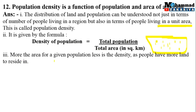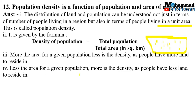Point number 3: More the area for a given population, less is the density, as people have more land to reside in — availability of land ज़्यादा है। Point number 4: Less the area for a given population, more is the density, as people have less land to reside. अगर area बहुत कम है और population बहुत ज़्यादा है तब population density high रहेगी।